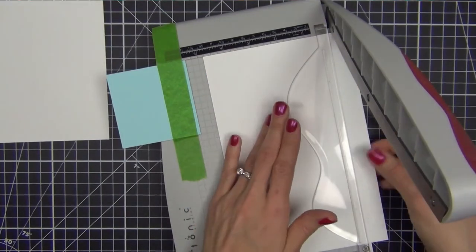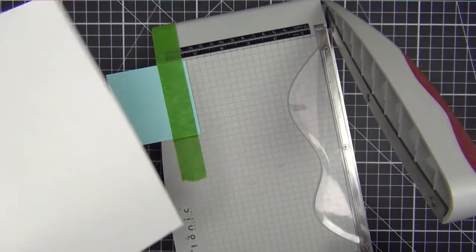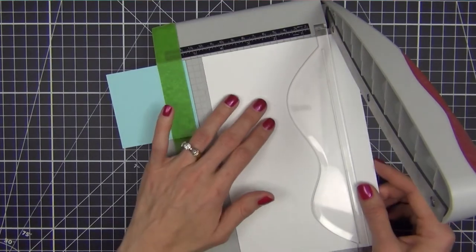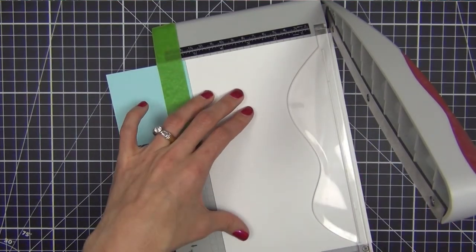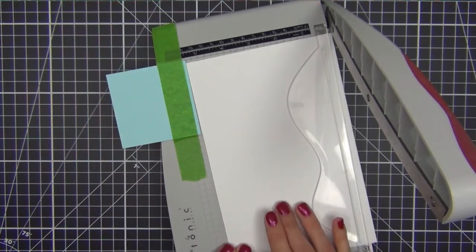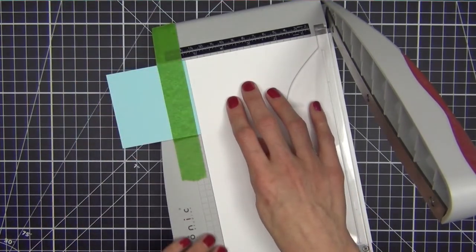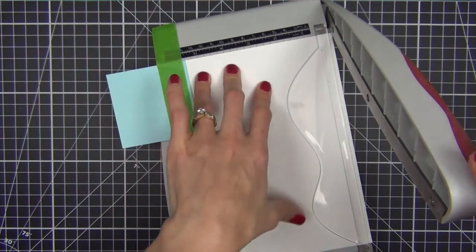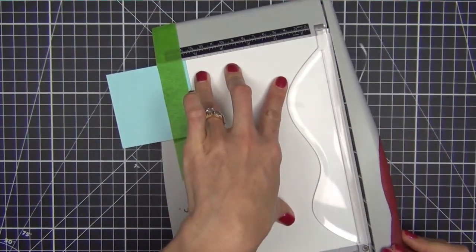So then we can lift that up, set it aside, and we'll take the larger cardstock that we had. Butt it up against there. Still making sure that you're not in there weird. Always good to just check before you cut. So there we go. Hold it down firm again.